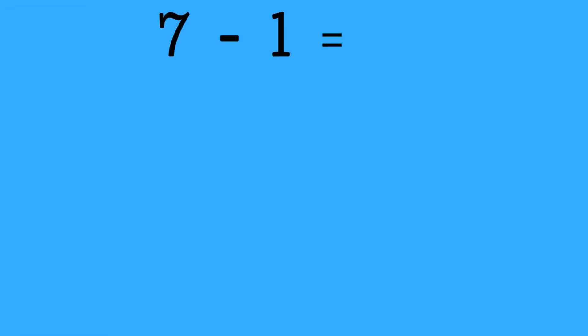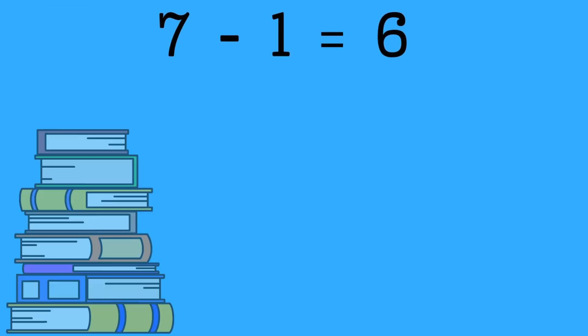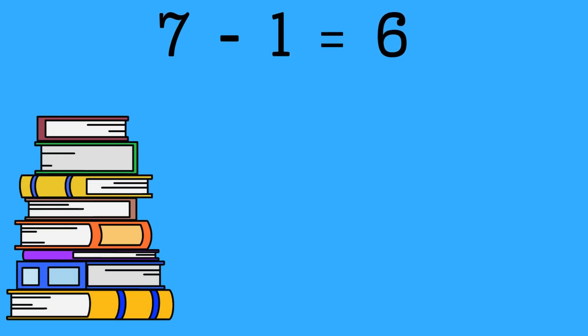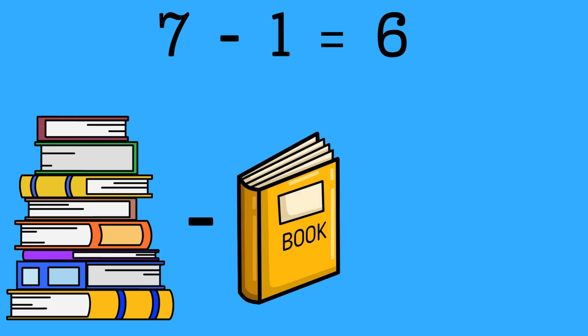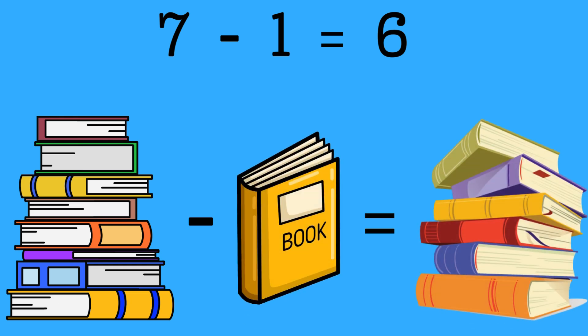7 minus 1 equals 6. Let's say you have 7 books and you put 1 back on the shelf. How many books left? Correct, 6 books.